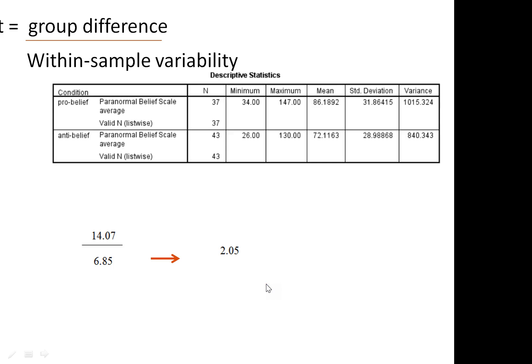Yay! We've taken a whole bunch of information, the means and variances for our two groups, and we've now got a single number out the other end that hopefully we can use to make a decision about whether or not something has happened to the paranormal belief scale means on the basis of the experimental conditions in which people participated. And that's where we move on to understanding the t-distribution.